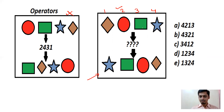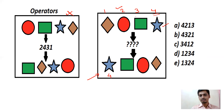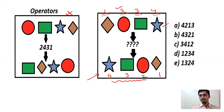After executing these elements you get: star, square, circle, rhombus. Star is mapped to 4, square to 3, circle to 2, and rhombus to 1. So the answer for this question is 4, 3, 2, 1. You pick option 4-3-2-1 and put it at the place of the question mark — that becomes your answer.